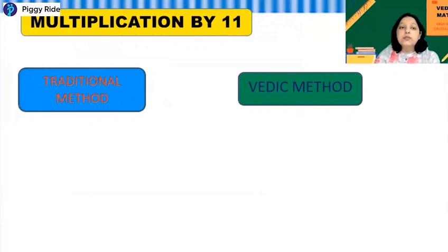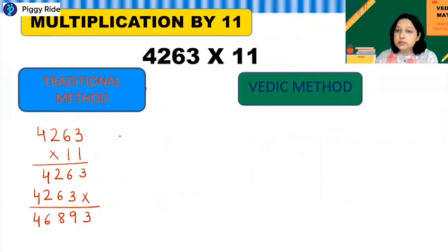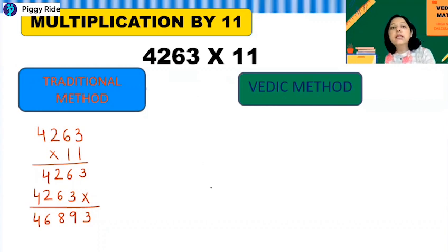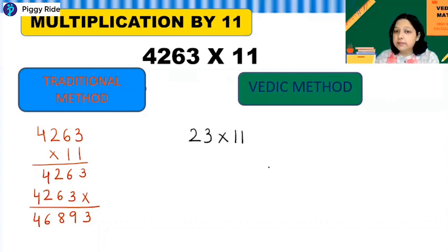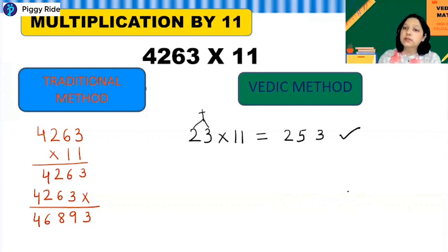Now let's learn another very interesting method called multiplication by 11. I have done this multiplication of a four-digit number with 11 using the traditional long method on screen. Before tackling a four-digit number, let's start with a simple two-digit example: 23 times 11. The concept is: write the number as it is, and in the middle put the sum of the two digits. 2 plus 3 is 5, so the answer is 253.